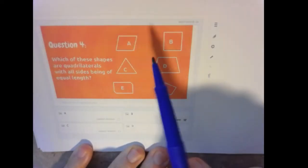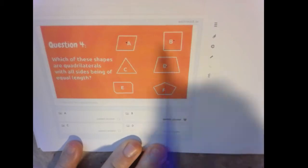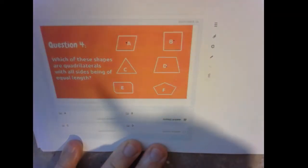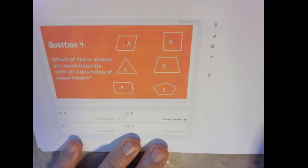Our quadrilaterals were A, B, and D. And we would need to say, okay, well, which ones have equal lengths, though?